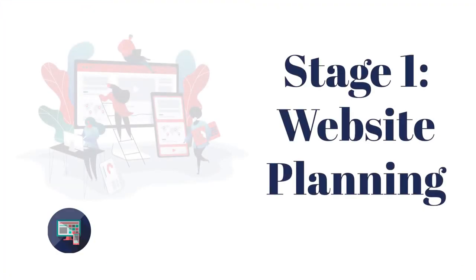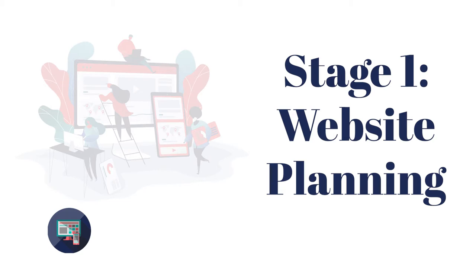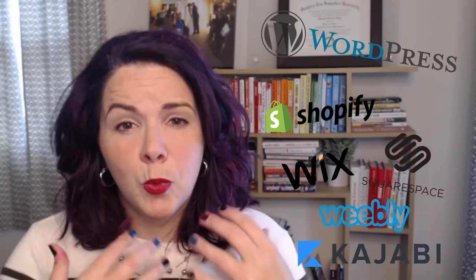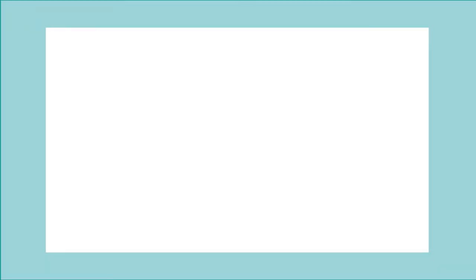Here are the five steps we're going to talk about. Number one, we're going to choose the software you're going to use to build your website — whether that's WordPress, Shopify, Squarespace, Wix, or wherever — and talk through what your different options are and who should choose which. Number two, we're going to talk about your domain, which is the part that comes after the www and before the .com or .co, and whether it actually makes a difference what your domain is and where you should buy it.